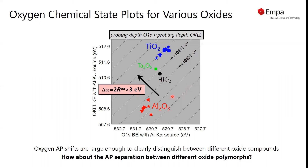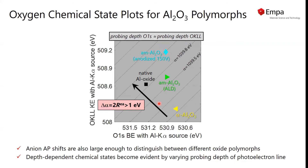For that, we only look at the data for aluminum oxide. If we enlarge that in the same type of Wagner plot, we can also nicely distinguish the different states of aluminum oxide when prepared, for instance, by ALD or anodization, with the native oxide or the reference alpha-alumina.